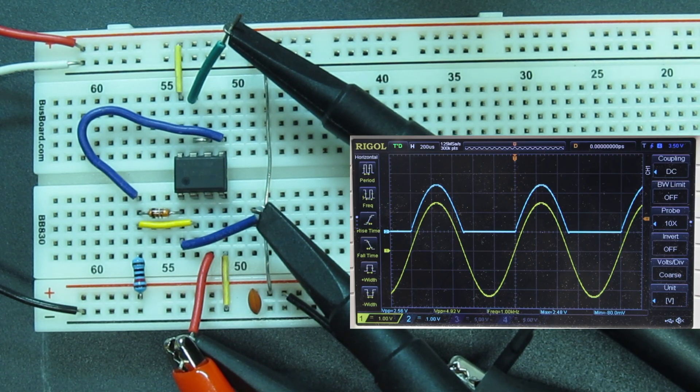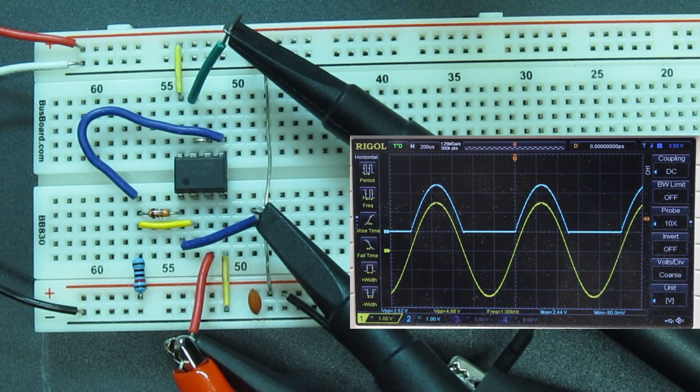I like what I see on the scope, but that's with a one kilohertz input signal. What if I upped it to 20 kilohertz?